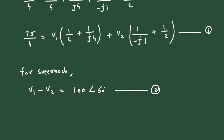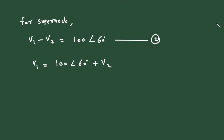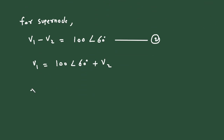From equation number 2, we can find the value of V1. So V1 is equal to 100 at an angle of 60 degrees plus V2. Now we can substitute this V1 into equation 1.